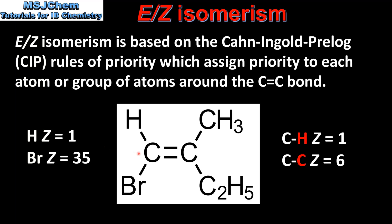The carbon atom on the left is bonded to a hydrogen atom and a bromine atom. The atomic number of hydrogen is 1 and the atomic number of bromine is 35. Therefore bromine is assigned the highest priority on the left carbon atom.